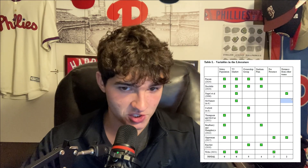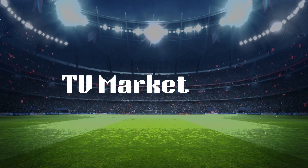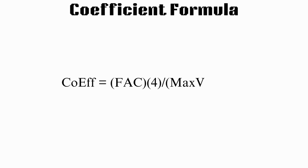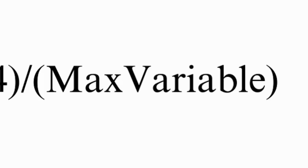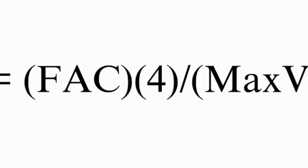Because the variables cannot all be weighted with equal importance, I'll be using the amount of times each variable appeared in the bodies of literature to determine how much weight each holds. Each factor receives a value FAC — equivalent to the number of times it was mentioned — with exception to TV market and distance from other MLB teams due to confounding as discussed. The values have been reduced so that the least weighted variable has a value of 1. The coefficient for each variable is established using a formula on screen: the coefficient equals the max variable value divided by FAC, normalized to the lowest FAC value of 4, which belongs to pro-presence. This makes it so each variable can give a maximum value that aligns with its weight.